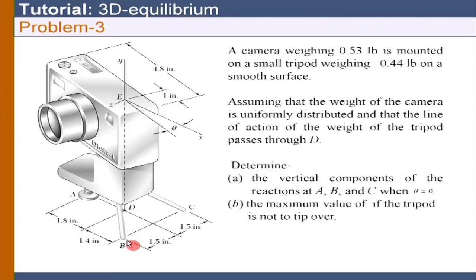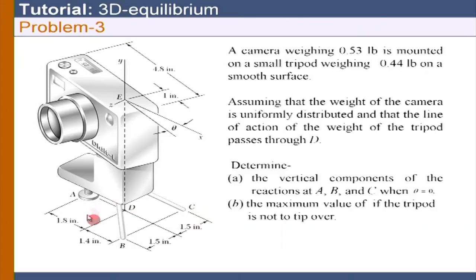When theta = 0, the camera and tripod are parallel to each other. There are reactions coming from the ground. We need to draw a free body diagram of the tripod on the ground plane, showing all weights and reactions. This becomes a parallel force system on the plane ABC at the ground.